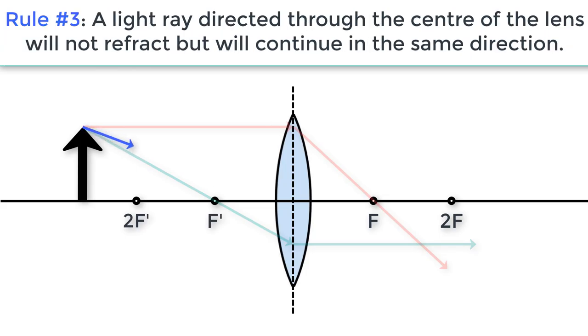Rule number three: a light ray directed through the center of the lens will not refract but will continue in the same direction.